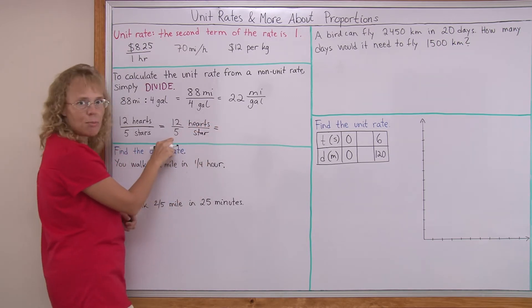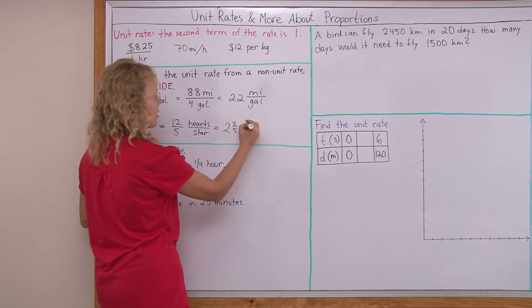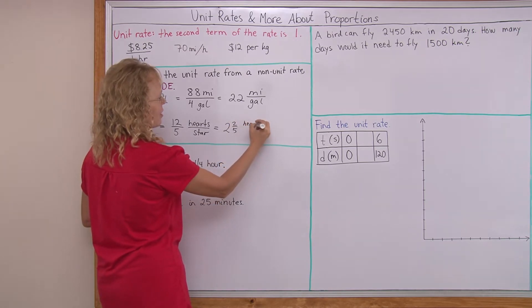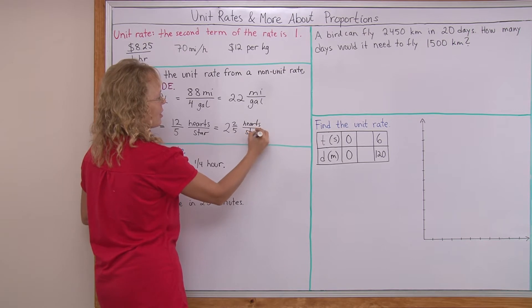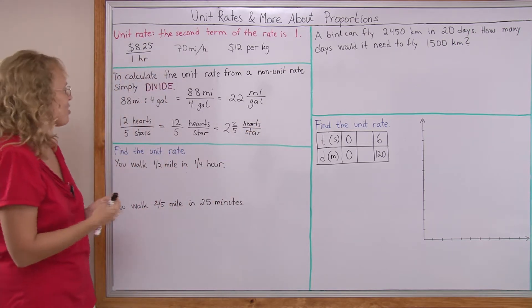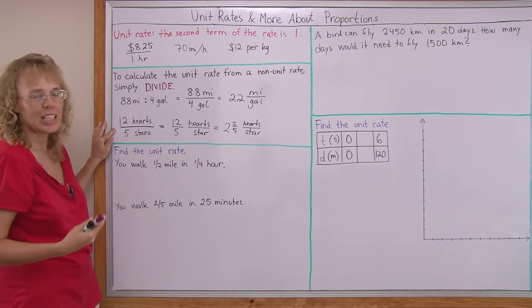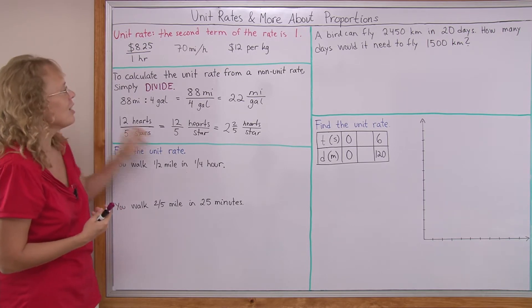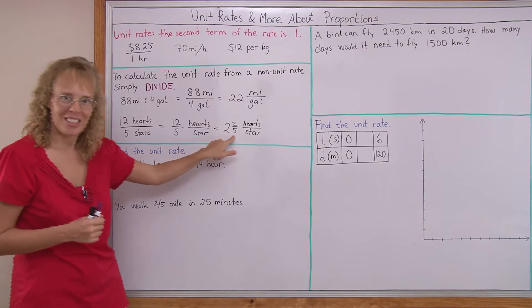Of course, this is now a mixed number. It is 2 and 2 fifths hearts per star. It's a little convoluted example, I know. It is just to illustrate that this is how you technically do it. You divide and then you get this many hearts per star.